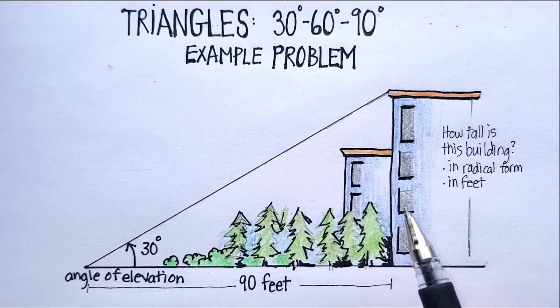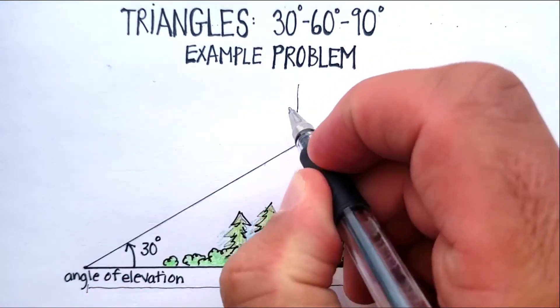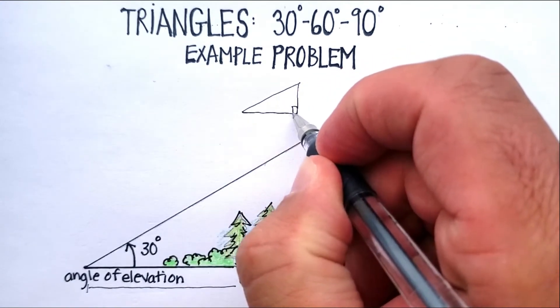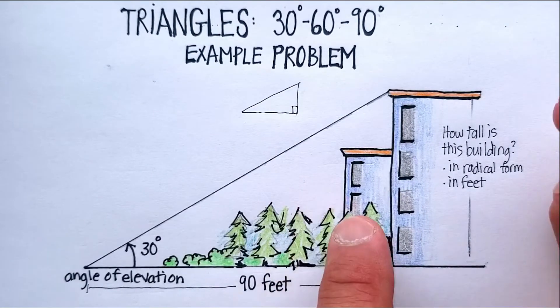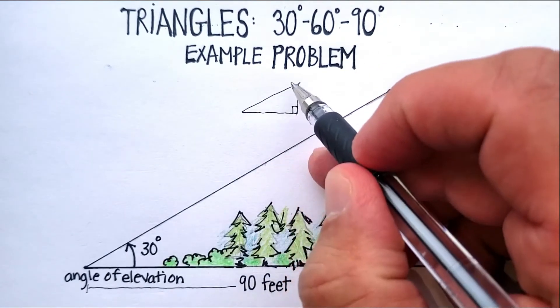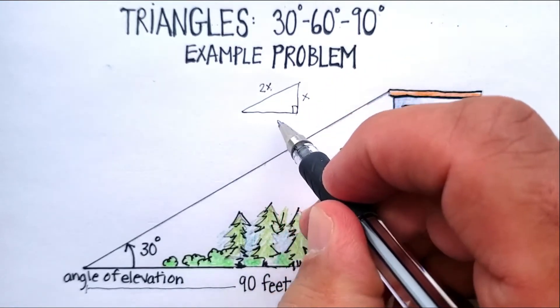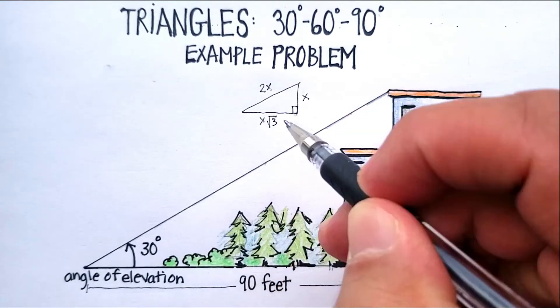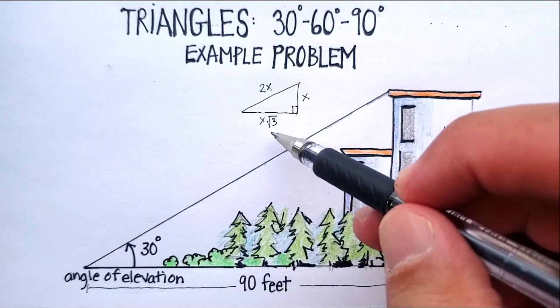What we have then is a 30-60-90 degree triangle. And remember that in a 30-60-90 degree triangle, we always know that the short side, the short leg, if we just called that x, we would know that the hypotenuse is always going to be 2x. And we know that the distance or the long leg is going to be x times √3. So we can just put in numbers in any of those and just fill in the other two sides immediately.